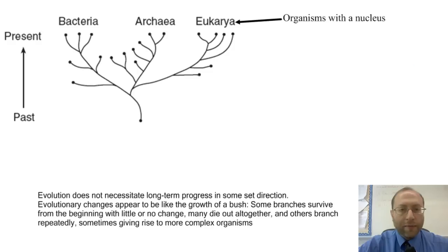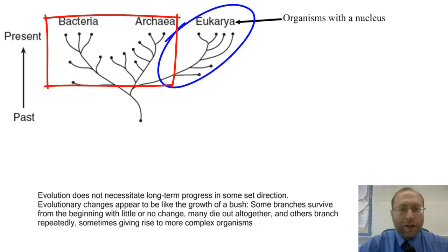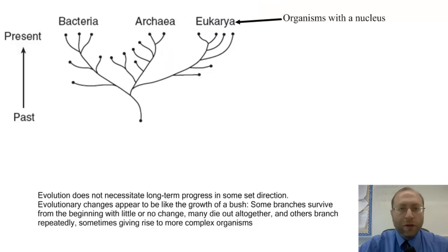Now here we see the cladogram for all of life. We have here on the left and on the middle, we have the organisms without a nucleus: the bacteria and the archaea. Then on the right, we have eukarya. These are the ones on the left are the prokaryotes, and the one on the right are the eukaryotes. We are eukaryotes. These are all the organisms with the nucleus. These are all animals, all plants, all fungi, and all of the protists.